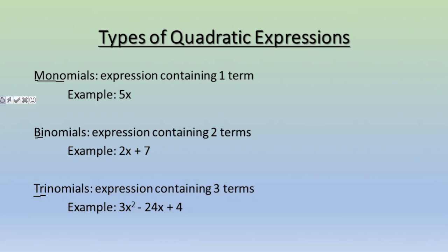A binomial is going to focus on an expression that contains two terms. When we see bi, we think two. An example would be something like 2x plus 7. I have two different terms that make that up: the 2x and the 7.